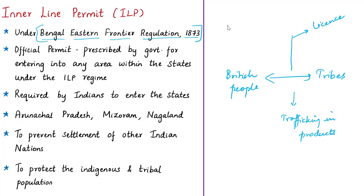The Bengal Eastern Frontier Regulation of 1873 was the first law promulgated in Assam for the peace and governance of certain districts on the eastern frontier of Bengal. As a whole, the Inner Line Permit is an official permit prescribed by the government for entering any area within certain states. It regulates the visit of Indians to particular states and is still prevalent in the northeastern states of Arunachal Pradesh, Mizoram, and Nagaland.